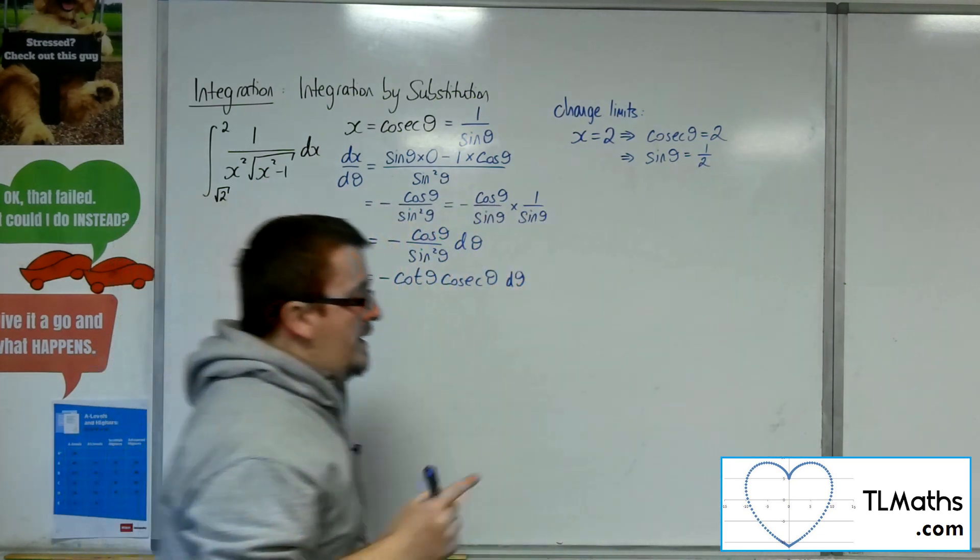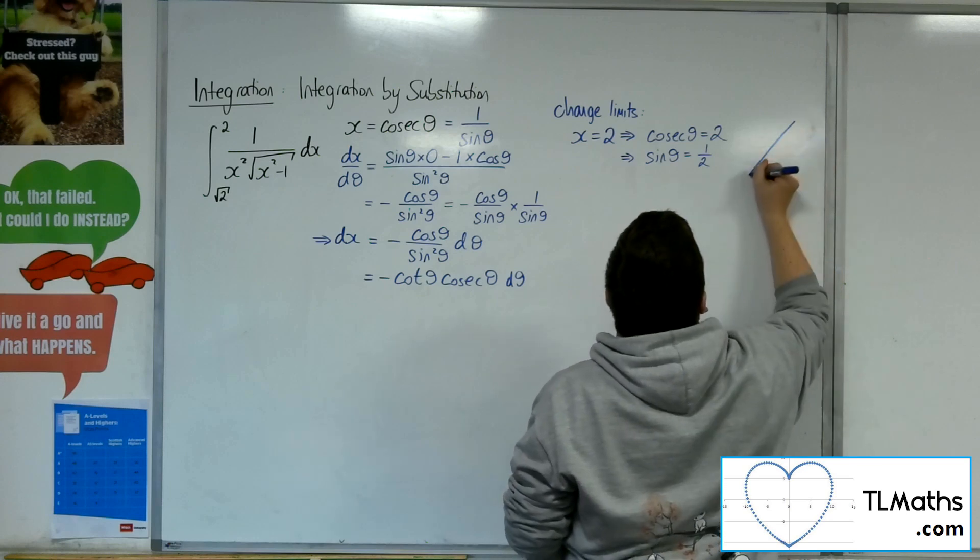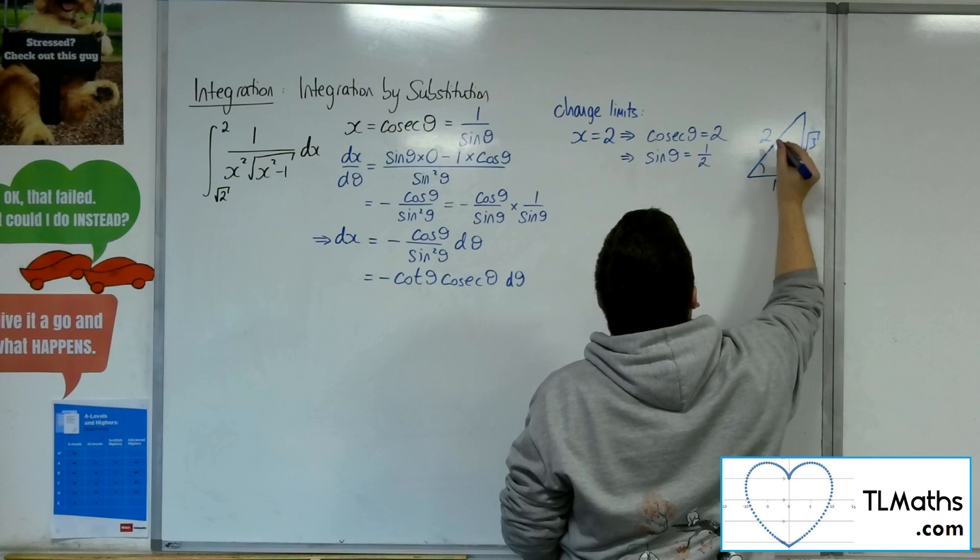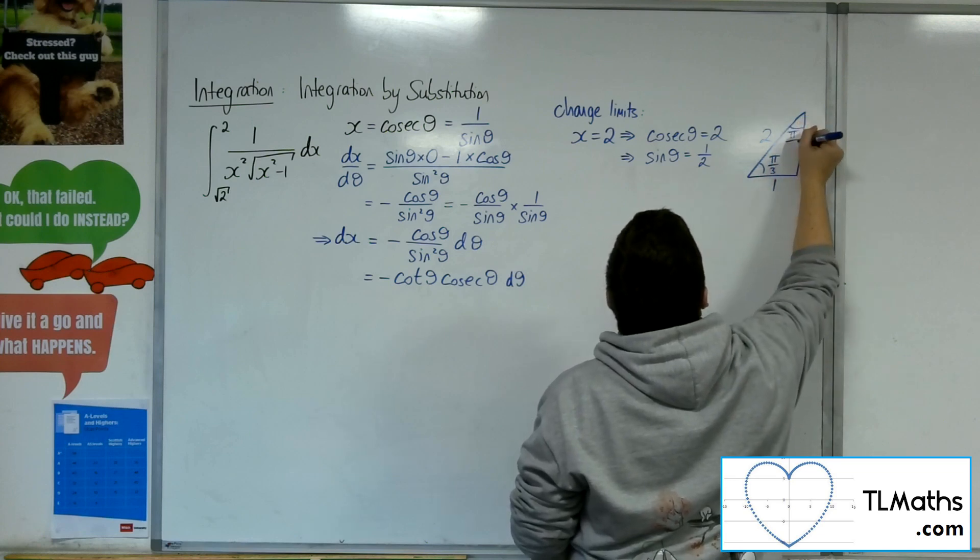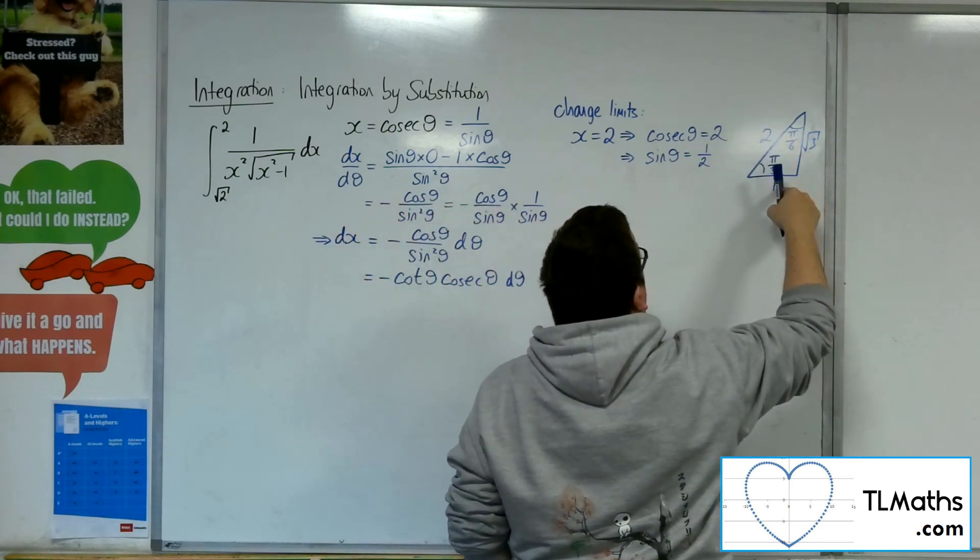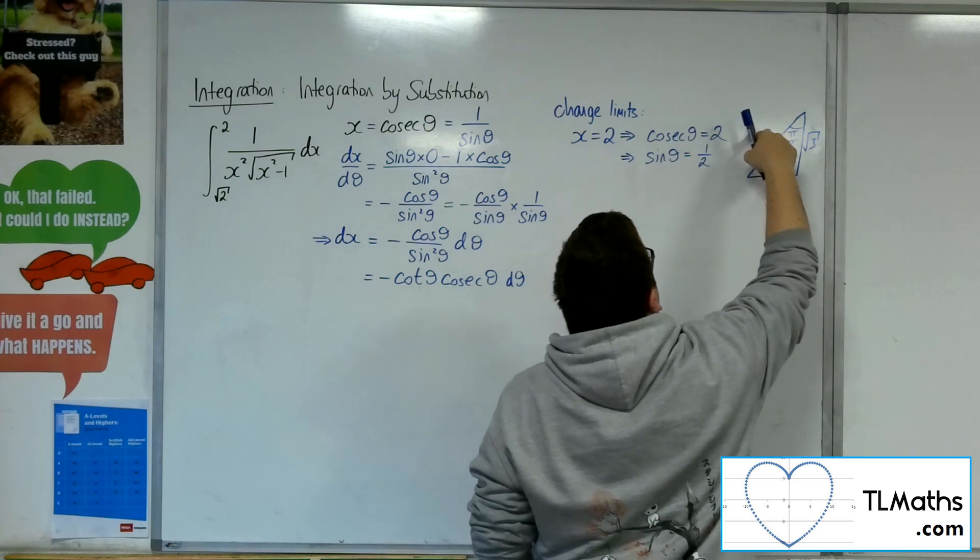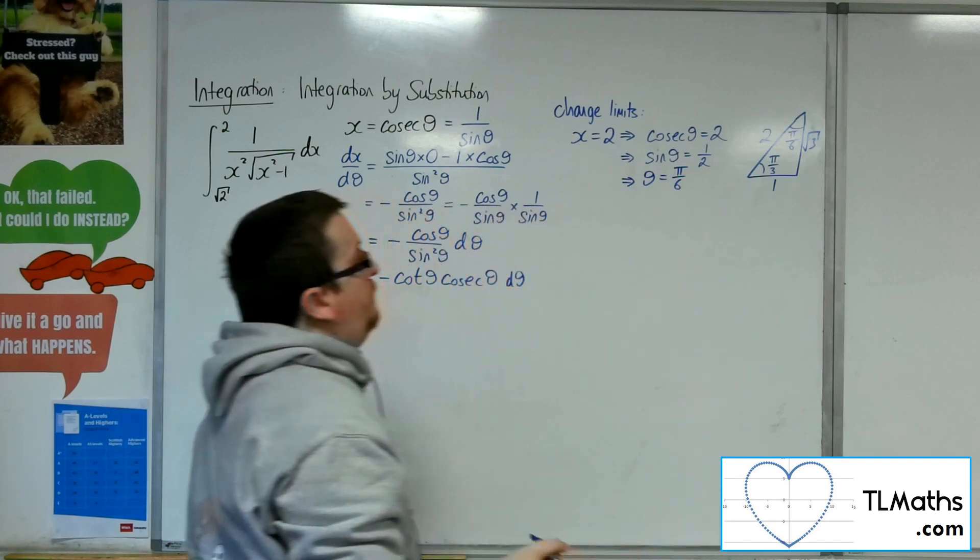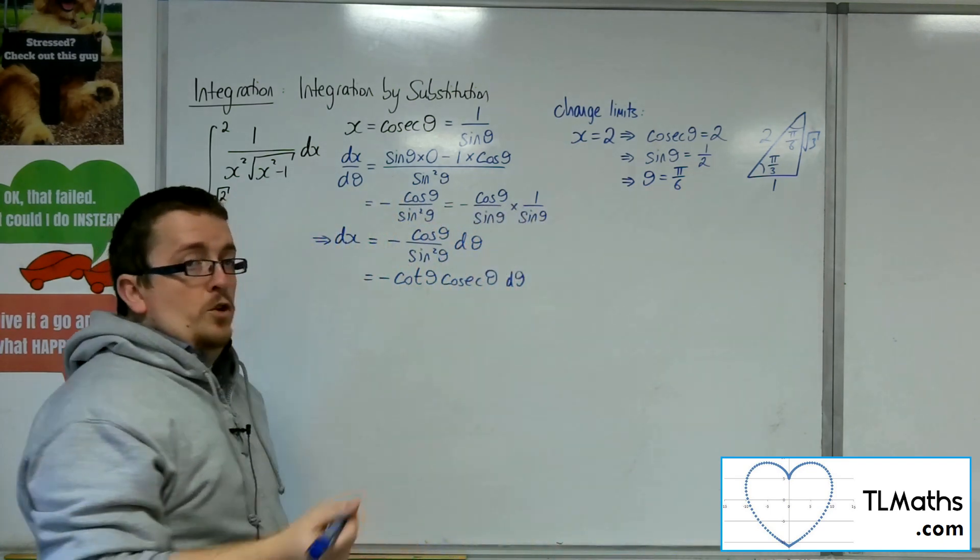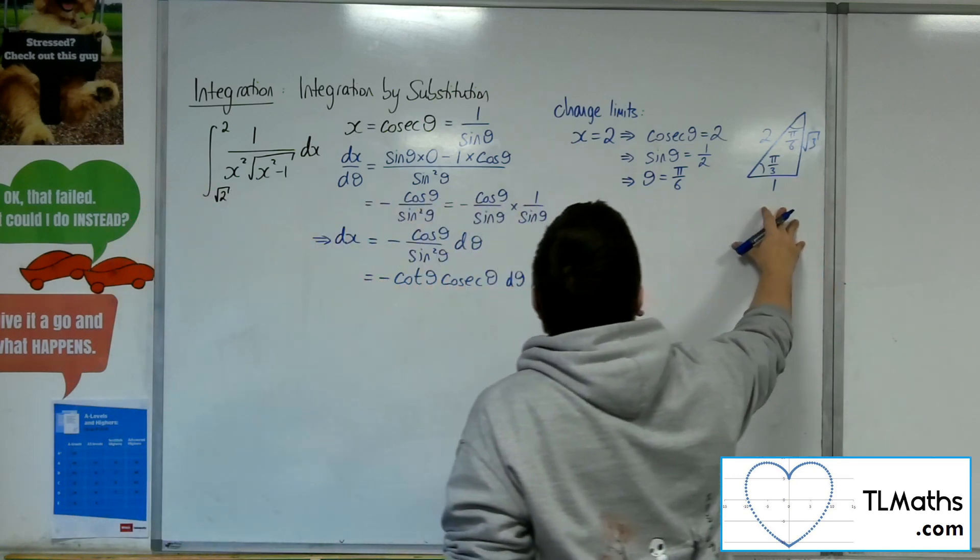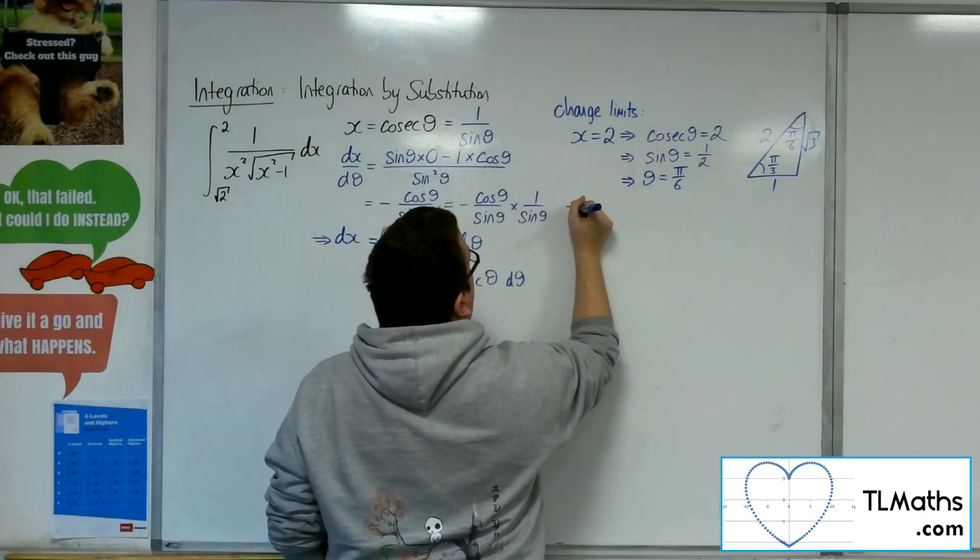Now if we think about a triangle that's got that. So 1, 2, root 3, that's going to be pi over 3, that's going to be pi over 6. So sine of a half, so 1 over 2, opposite over hypotenuse. So that means that theta must be pi over 6. Now you could always double check that on your calculator as well. But I'm just going to bring in the right angle triangles here.